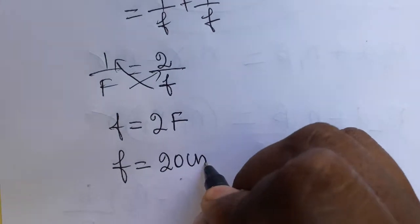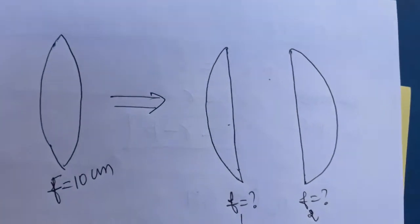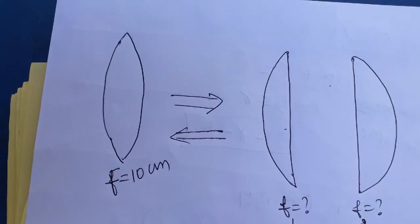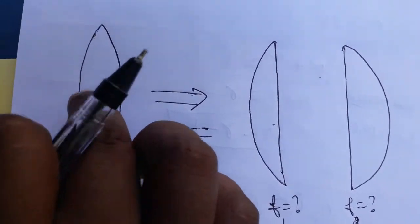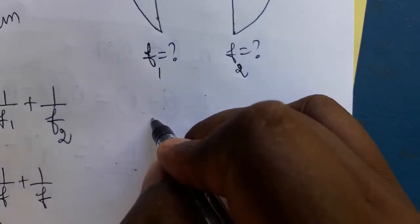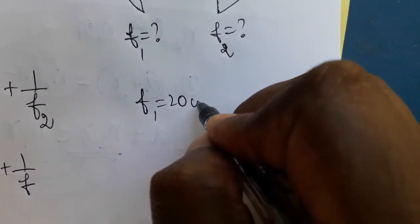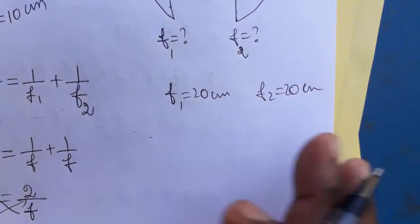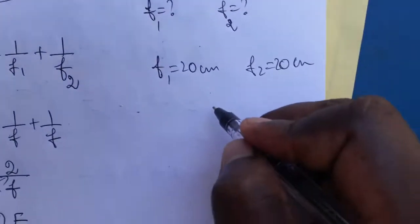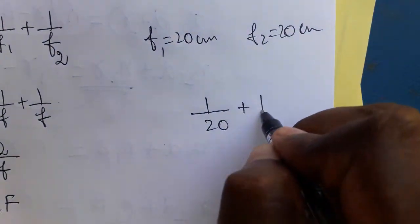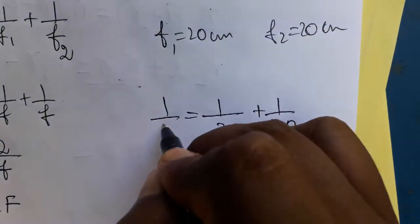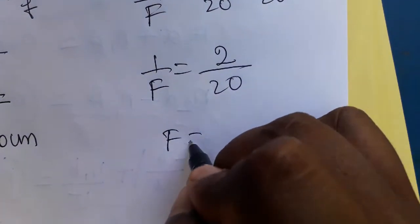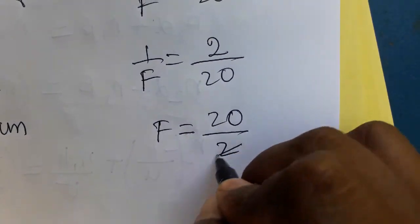Now going the opposite way: if we take two plano-convex lenses and combine them to make one biconvex lens, each has focal length 20 centimeters — f1 = 20 cm, f2 = 20 cm. So 1/20 + 1/20 = 1/F, which gives 2/20 = 1/F, therefore F = 20/2 = 10 centimeters as the combined focal length.